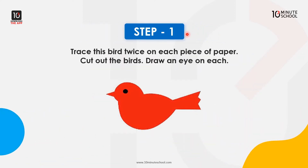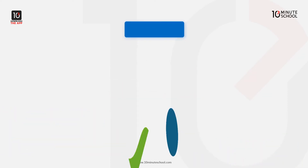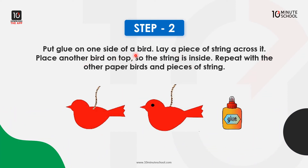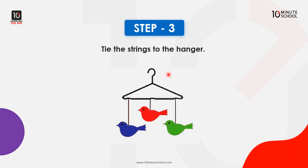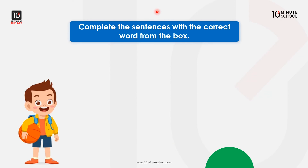Step 1: The first thing you should do is trace this bird twice on each piece of paper, cut out the bird, and draw an eye on each. Step 2: Put glue on one side of a bird, lay a piece of string across it, place another bird on top so the string is inside. Repeat with the other paper birds and pieces of string.